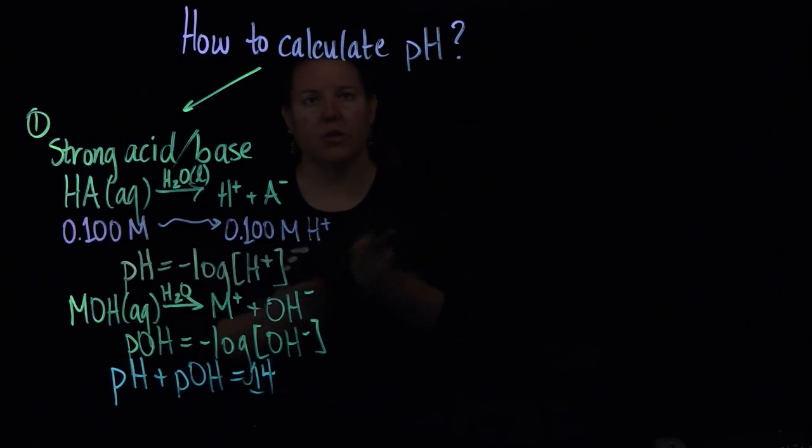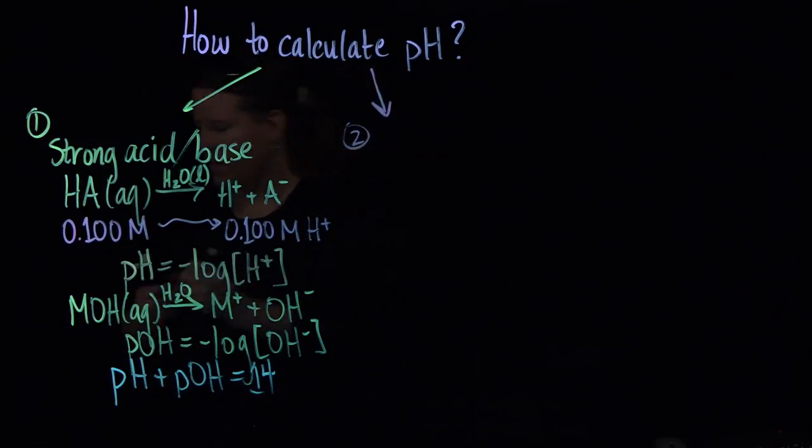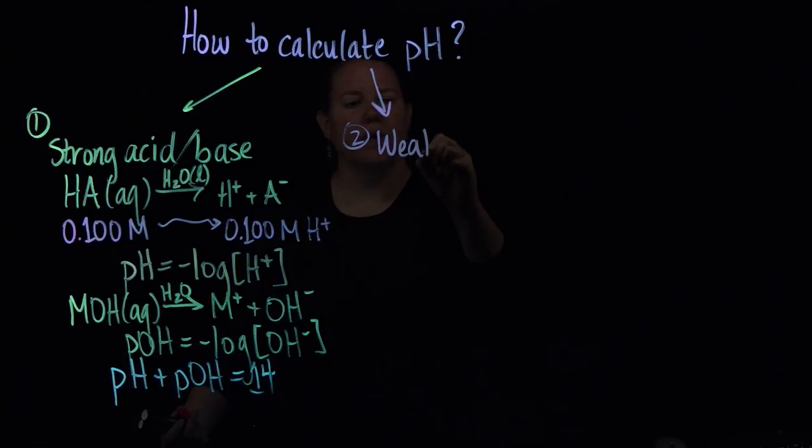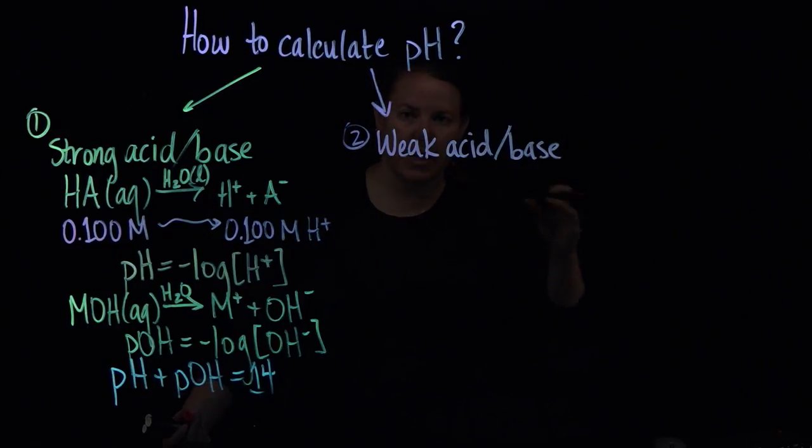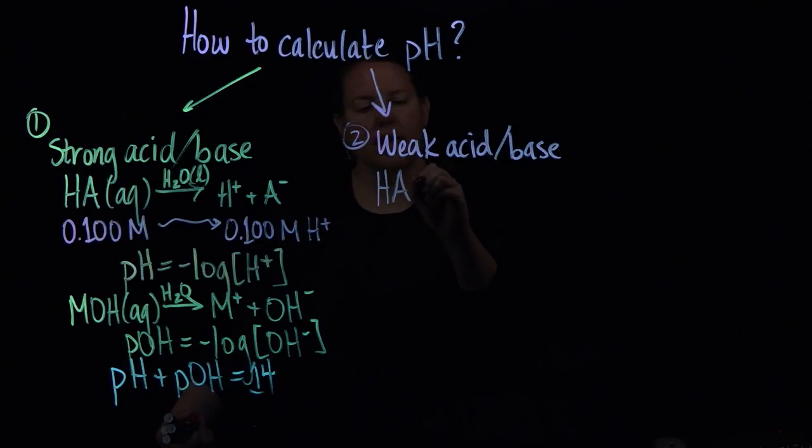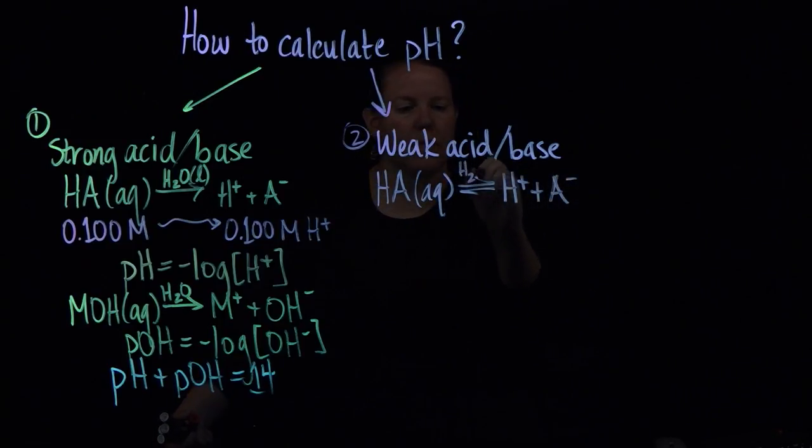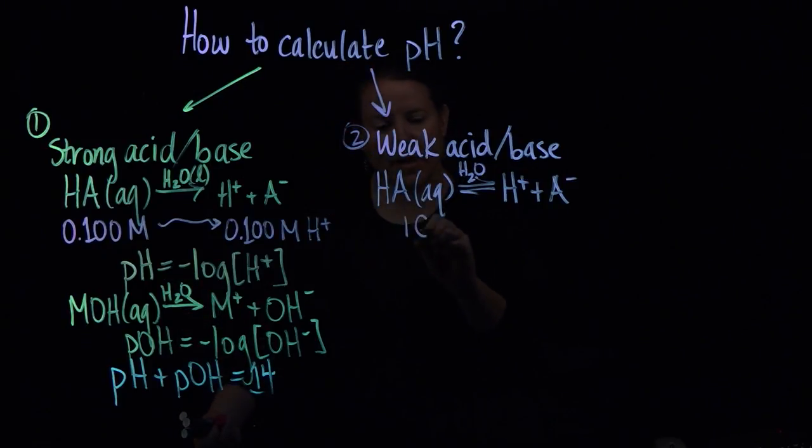The other way to calculate pH, or another way I should say, I'm going to call that one, we'll call this two, is if you have a weak acid or a weak base. If you have a weak acid or a weak base, then what characterizes them is that they do not completely dissociate in water. So you're having something like HA, which is aqueous, forming an equilibrium with its ions in water. And in that case, it's not enough to just take the original concentration and work with that. In these cases, you have to make an ice table.